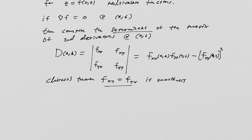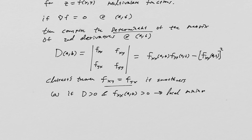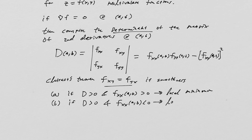The theorem has three cases. Case A: if D is greater than zero and fxx(a,b) is greater than zero, then we have a concave up surface — this is a local minimum. If D is greater than zero and fxx(a,b) is less than zero, then we have a local maximum. Finally, if D is less than zero, then f at a,b is neither — we call this a saddle point.